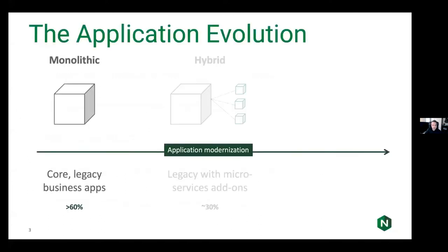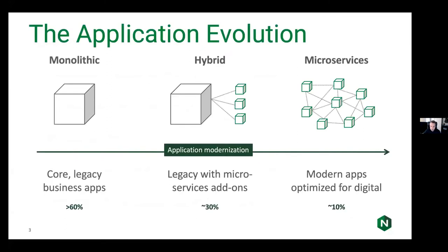This slide is a maturity model that represents different stages where companies tend to sit. The first stage being a monolith or traditional application, which is usually an application built as a single unit. A good example would be a simple application with a database, a client-side user interface, HTML pages, and a server-side PHP application. To make any alterations, a developer may need to build and deploy an updated version, which can be very slow and difficult to scale. Making one change might require a big bang release.